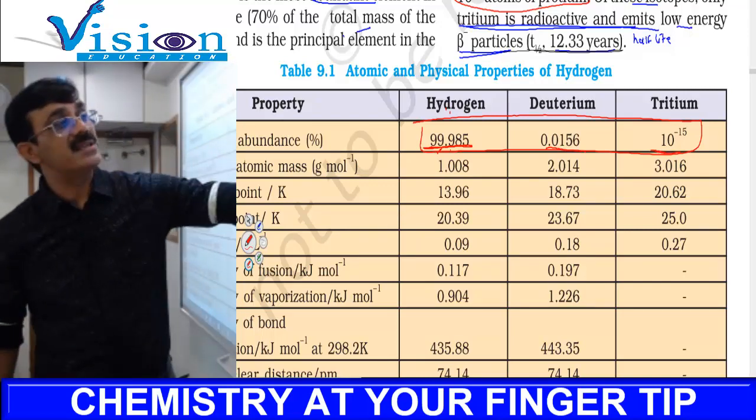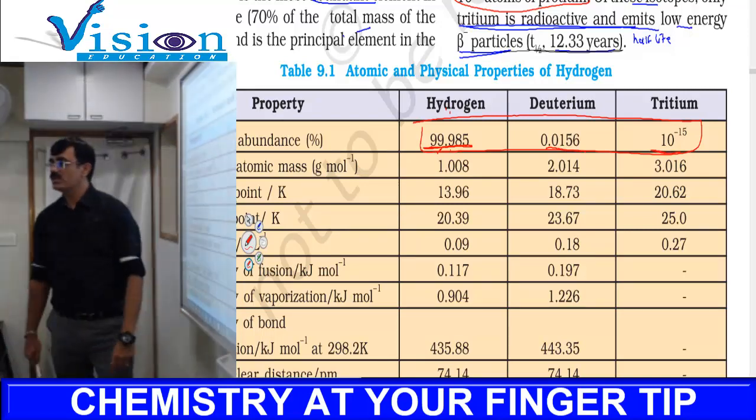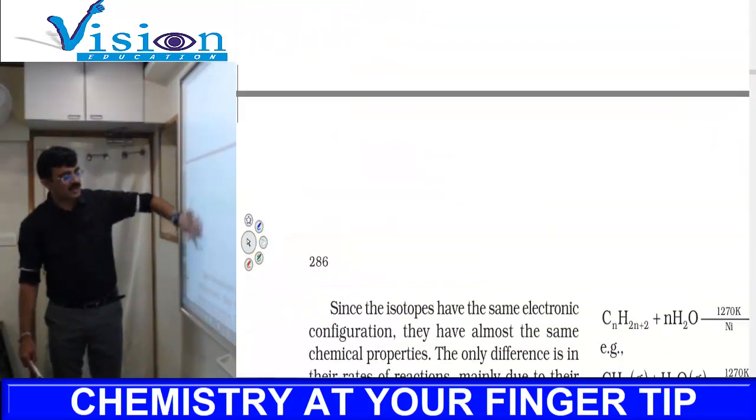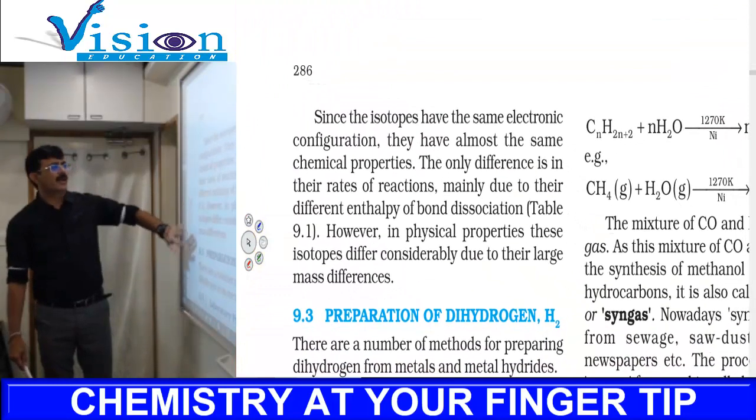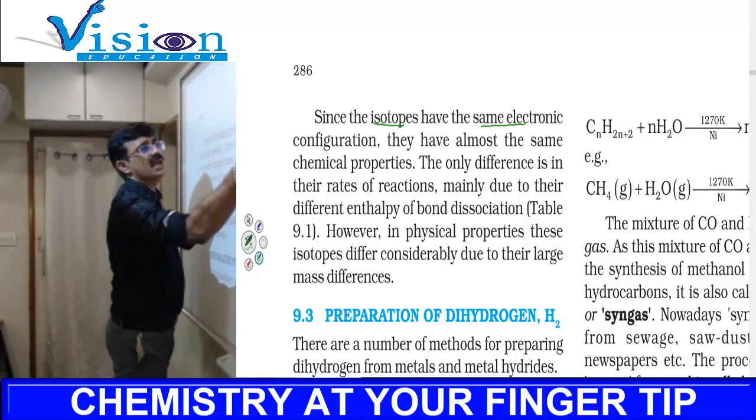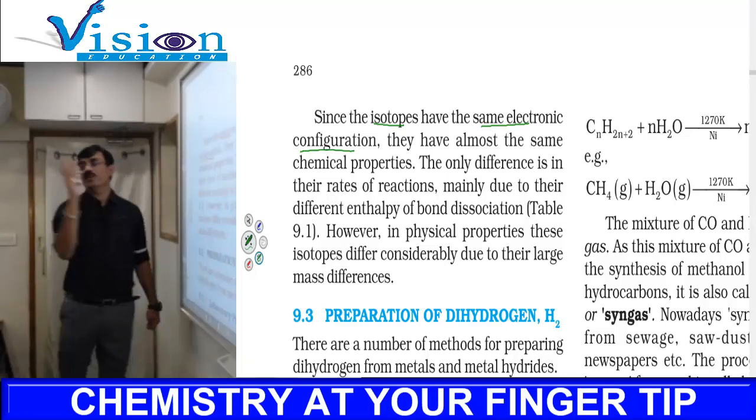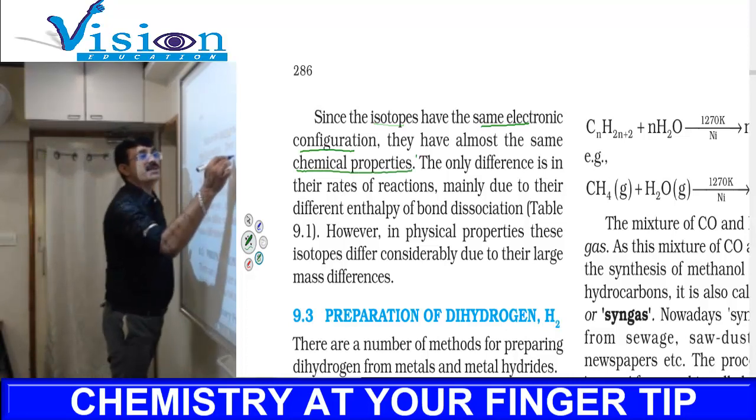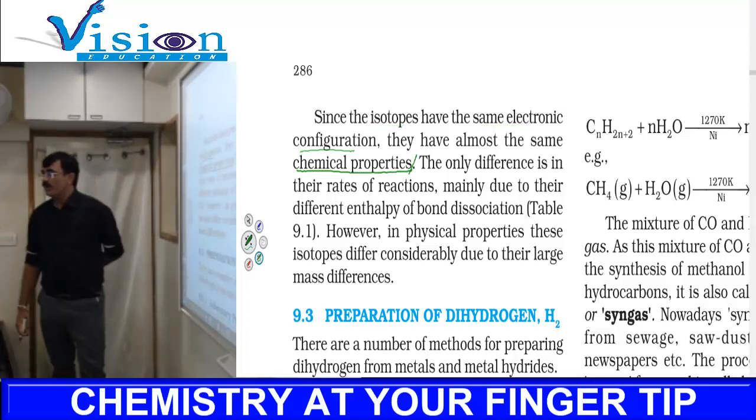About isotopes: normally isotopes have the same electronic configuration because the number of electrons is the same. That's why the chemical properties are the same. However, they differ by mass - the three have different atomic masses.